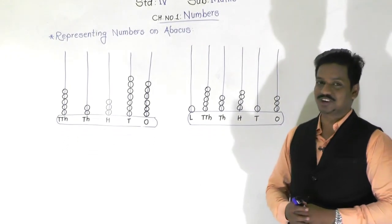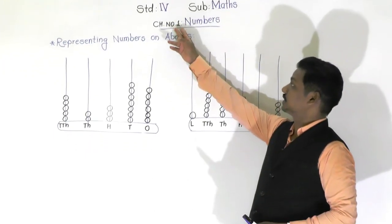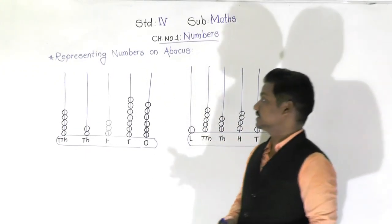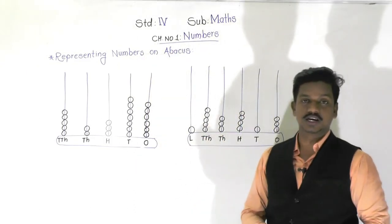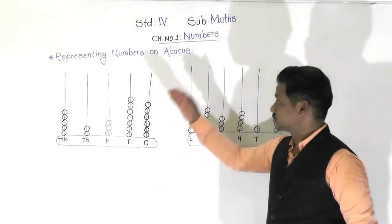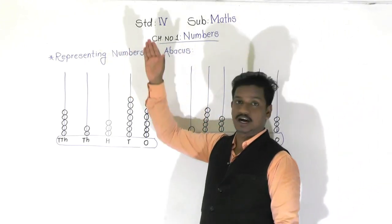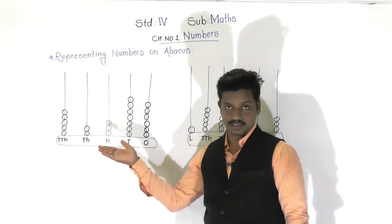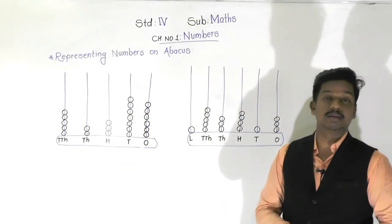Hello everyone, welcome to today's video lecture. Today in Maths, Chapter 1 - Numbers, we are going to learn the next concept: representing numbers on an abacus. As you know, we are learning five-digit and six-digit numbers, so today we are going to learn to represent five-digit and six-digit numbers on an abacus.